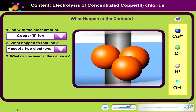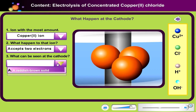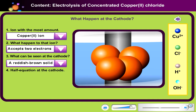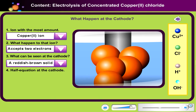What can be seen at the cathode? Click the drop-down menu to select your answer. A reddish-brown solid is formed at the cathode. What is the half equation at the cathode? Click the drop-down menu to select your answer.